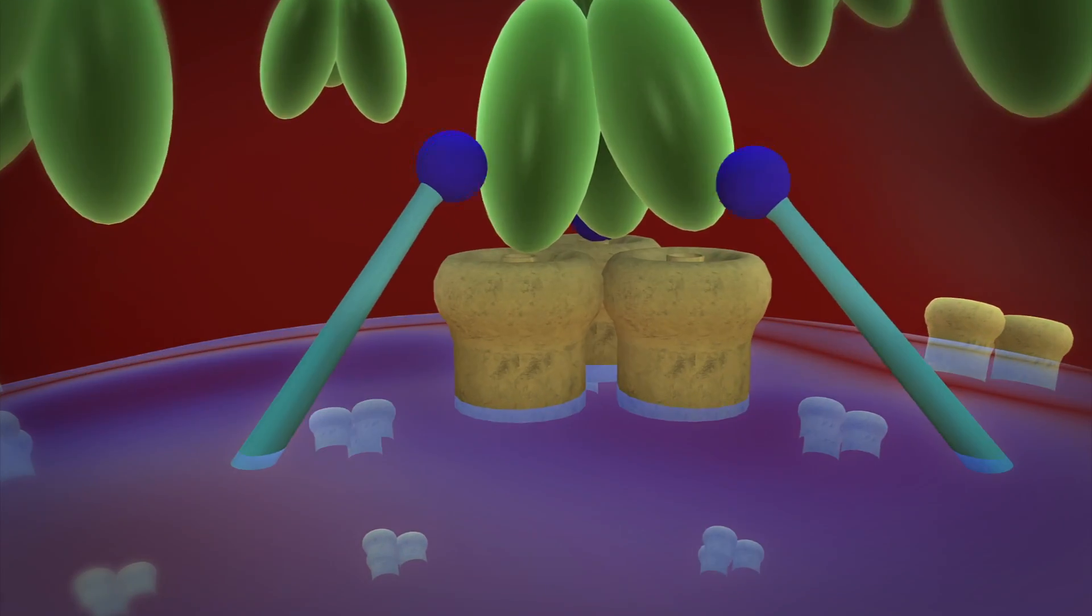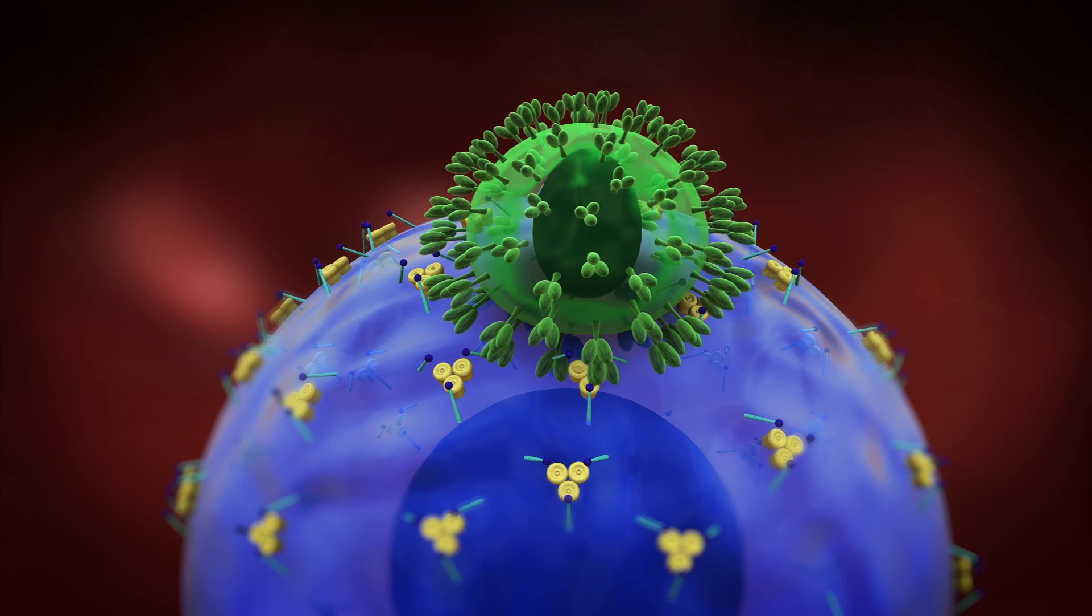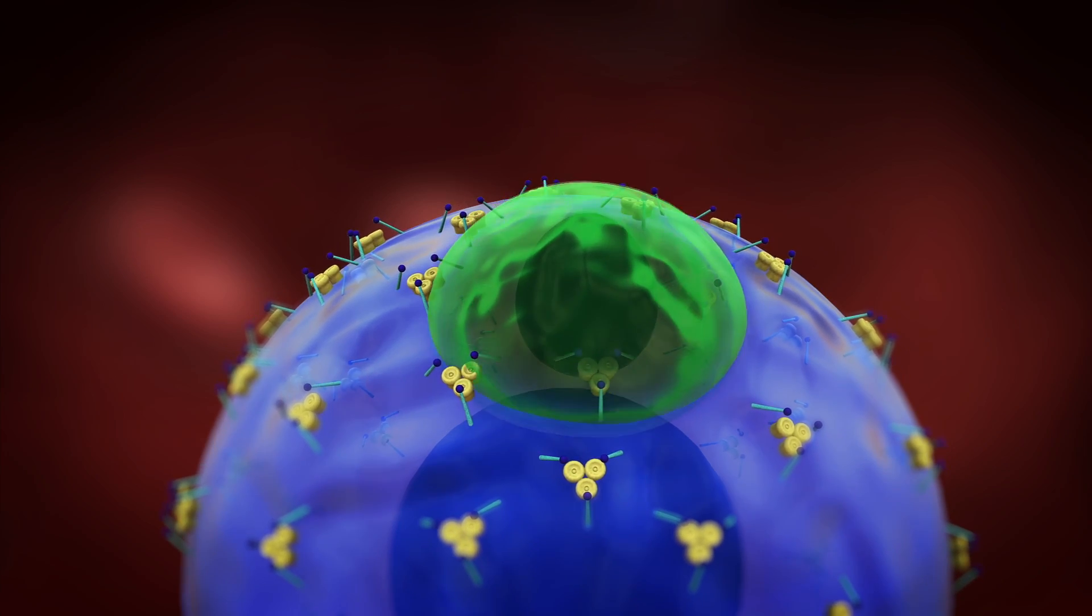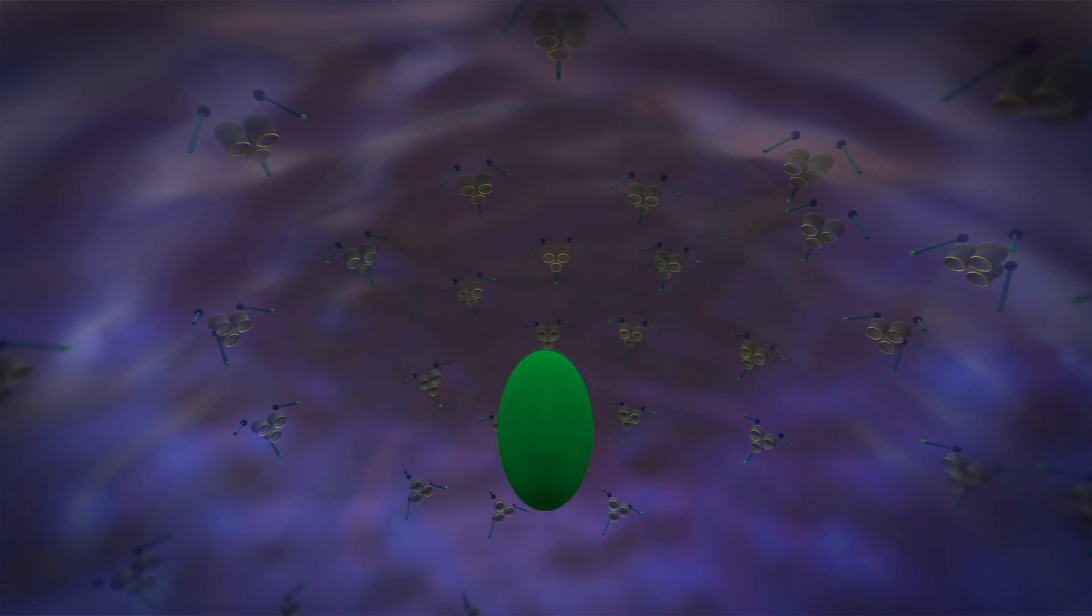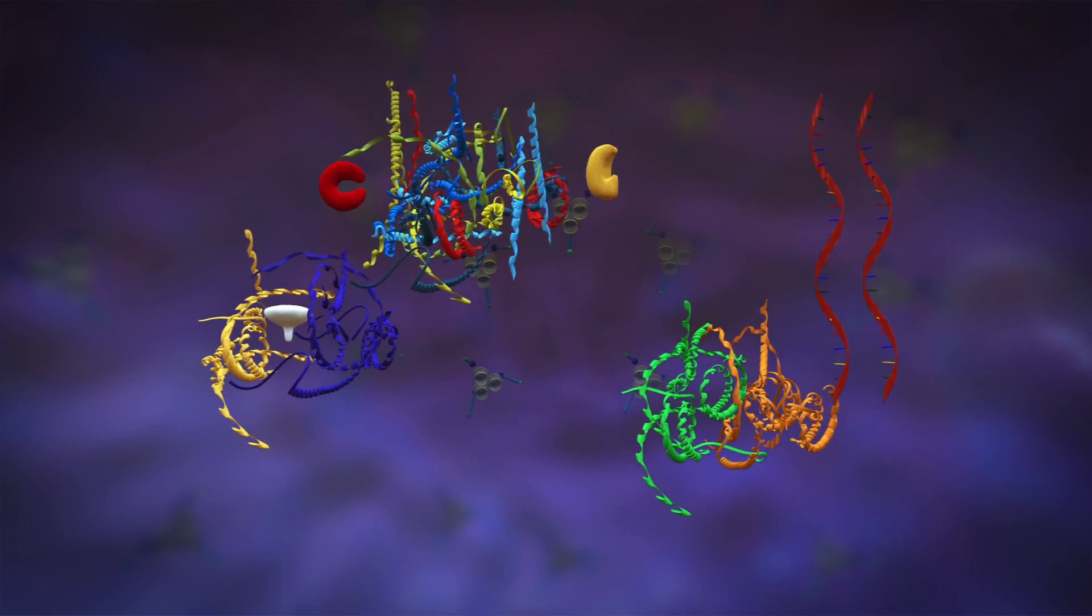When an HIV virus attacks a cell, it binds to cell receptors and invades the cell. There, it releases enzymes and two RNA strands.